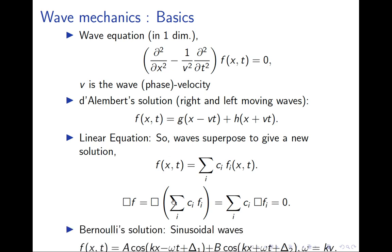Another important form of solution, due to Bernoulli, is the sinusoidal wave: f = A cos(kx - omega*t + delta_1) + B cos(kx + omega*t + delta_2). Here delta_1 and delta_2 are initial phases, k is the wave number (2*pi over wavelength), and omega = kv is the angular frequency. The amplitude is A or B. D'Alembert showed any arbitrary wave profile works, but Bernoulli's solution is the special sinusoidal case.